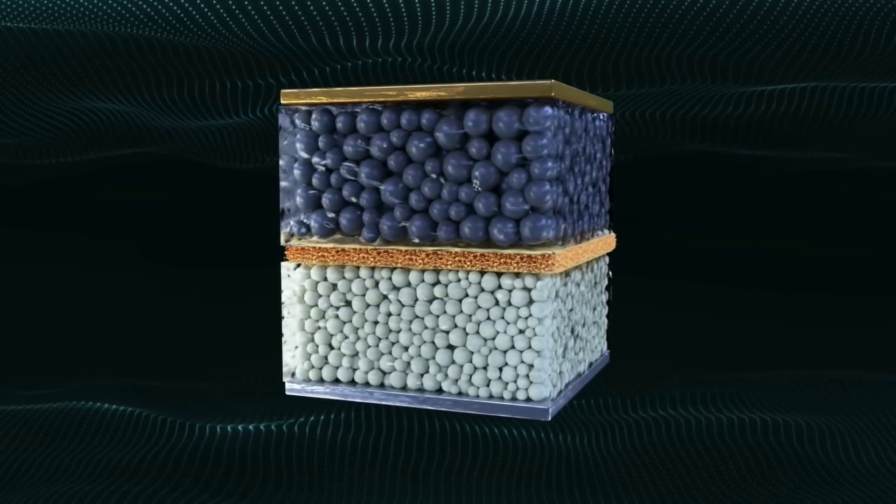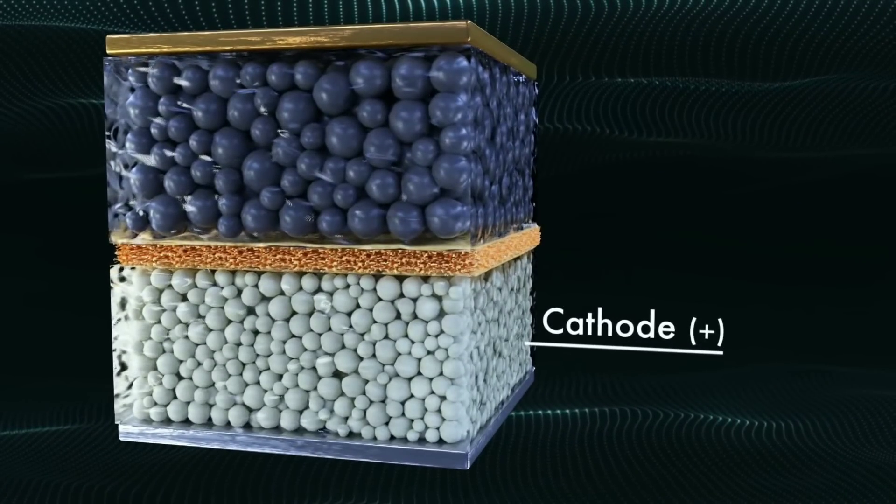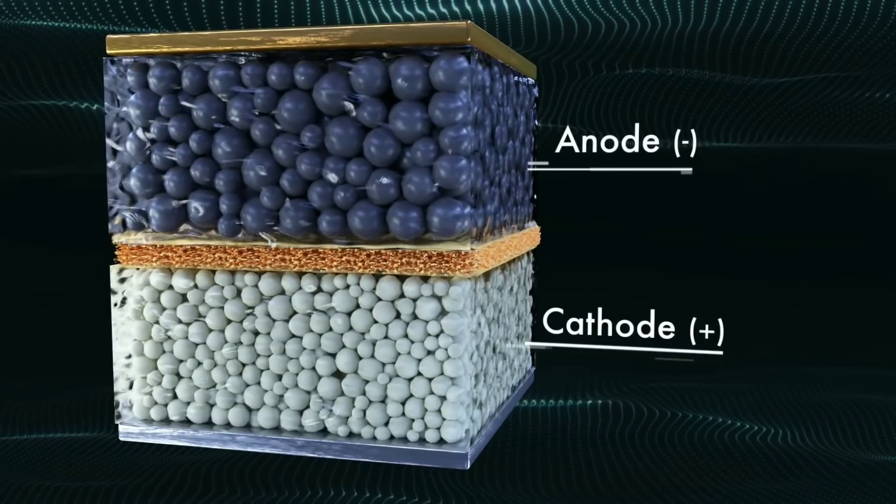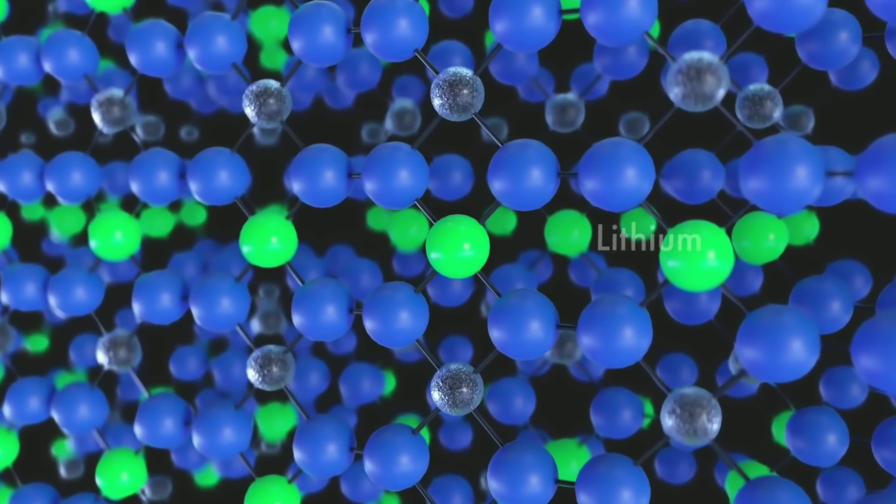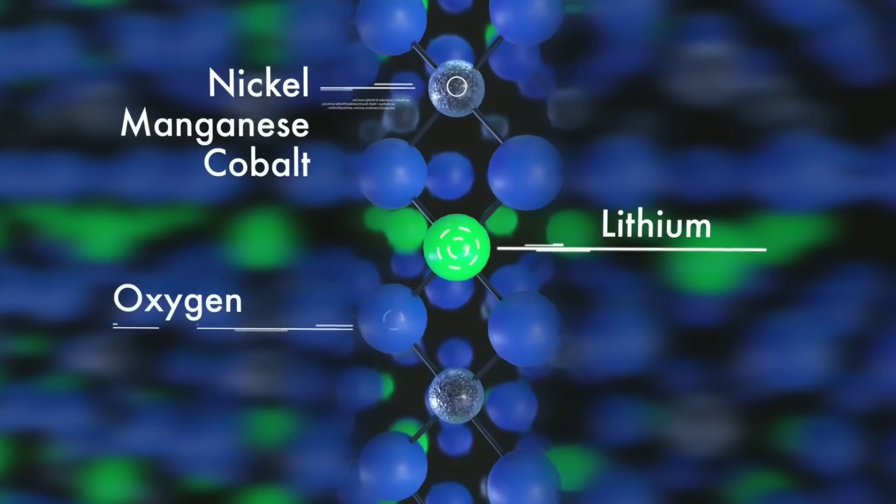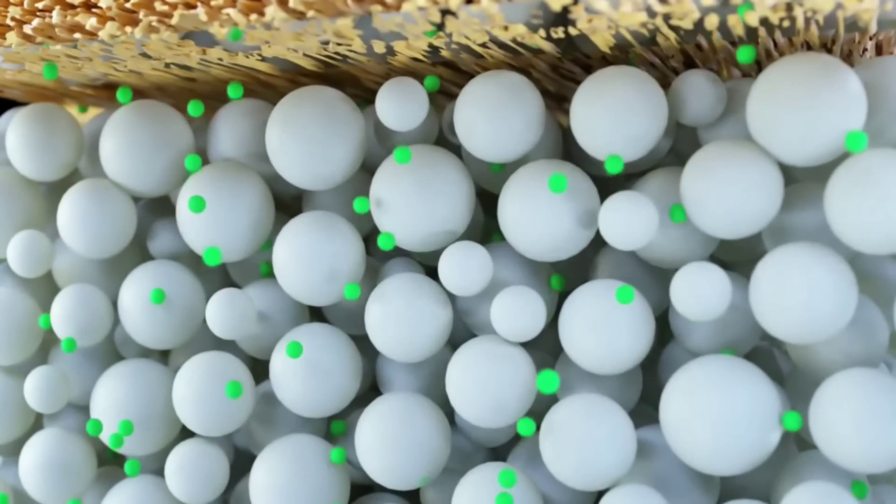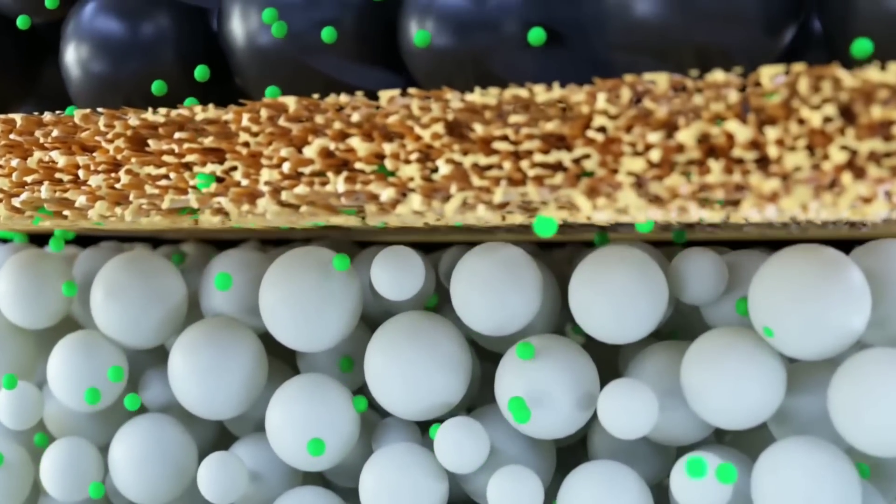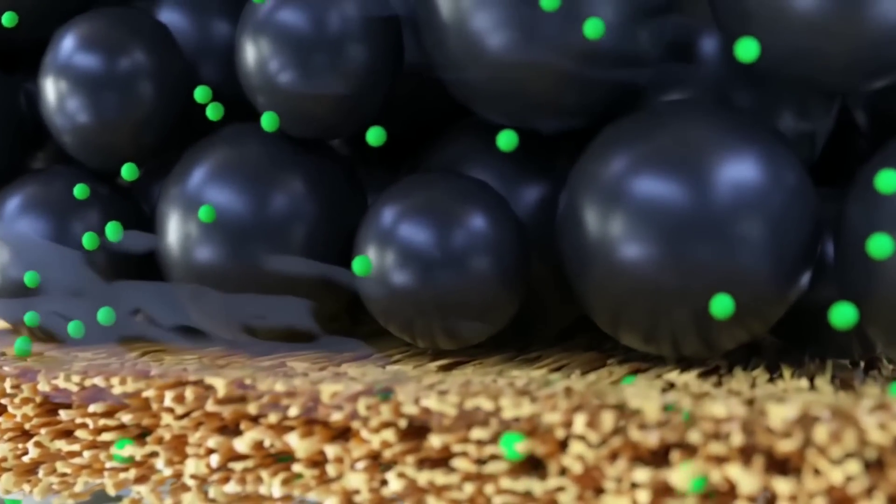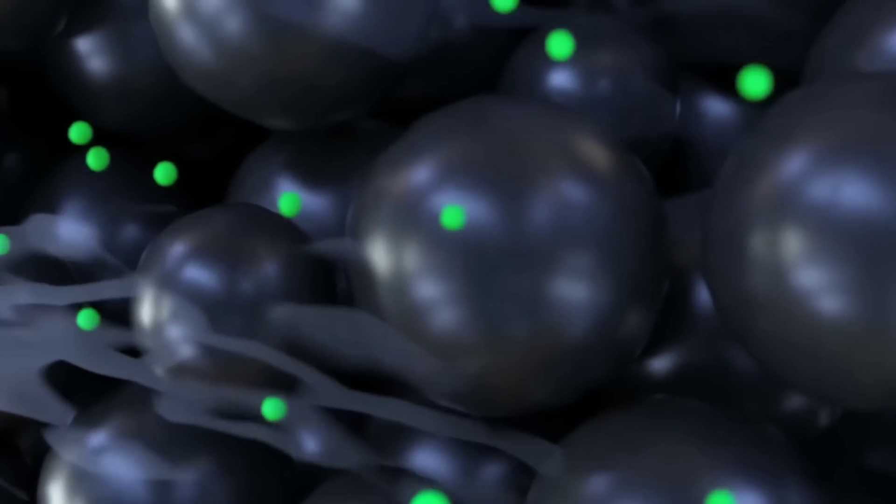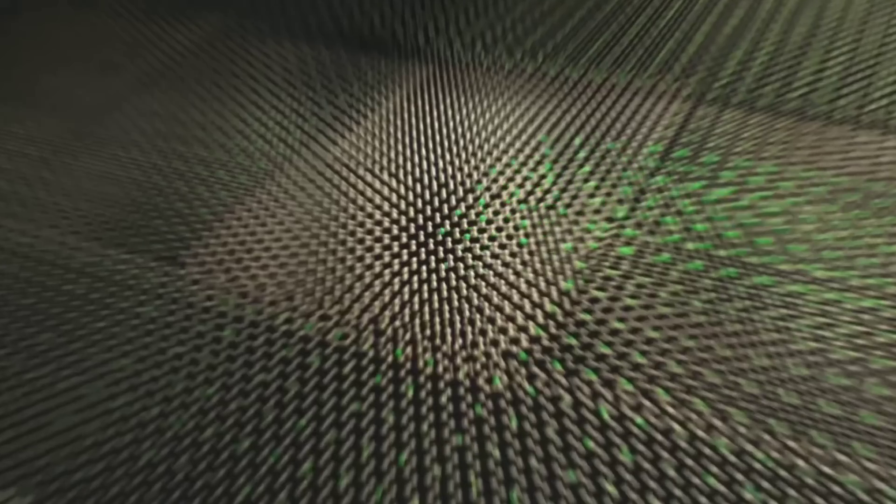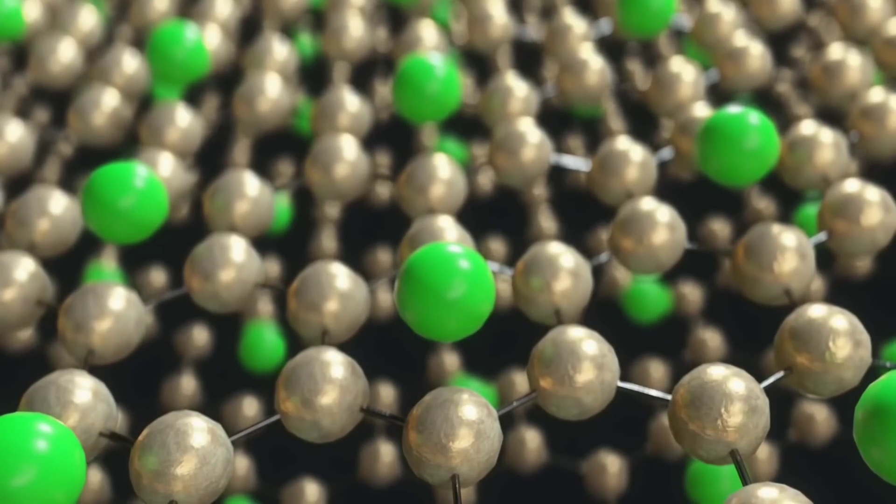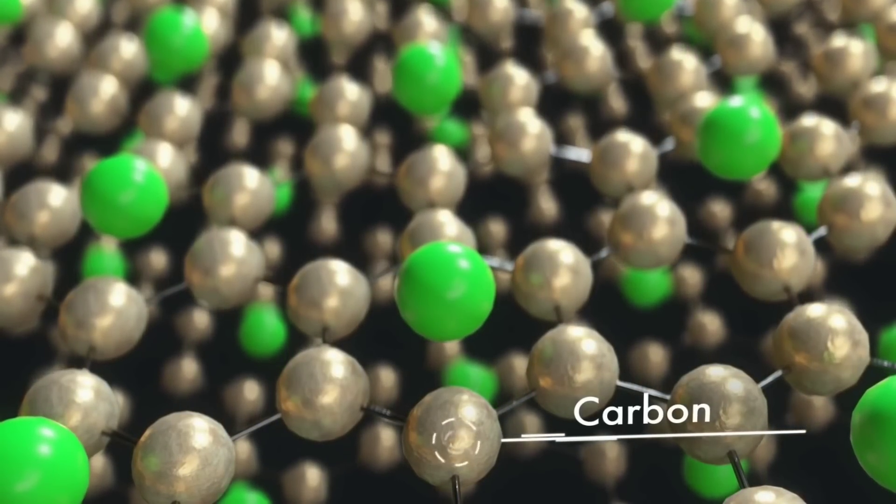A lithium-ion battery consists of two electrodes, an anode and a cathode. The anode is the negative electrode that stores lithium ions when the battery is charged and releases them when the battery is discharged. The cathode is the positive electrode that receives lithium ions when the battery is discharged and gives them up when the battery is charged. Between the electrodes is an electrolyte that allows lithium ions to move back and forth.